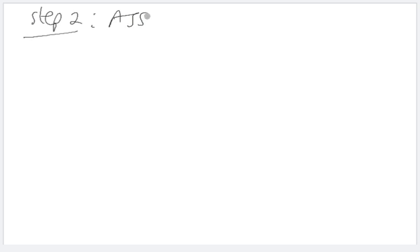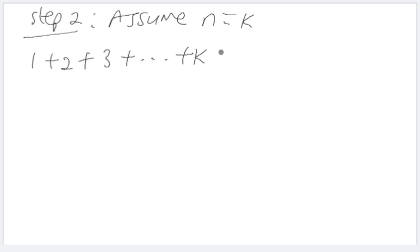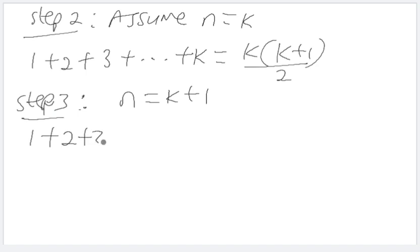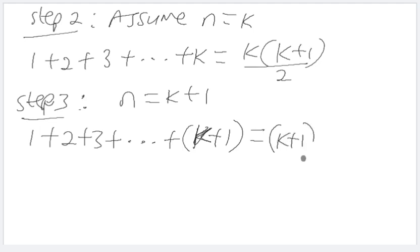Step two: we assume that it is also true for n equals k, so the statement becomes one plus two plus three plus ... plus k equals k times (k plus one) over two. Then step three: we must show this result is also true for n equals k plus one, so we need to show one plus two plus three plus ... plus (k plus one) equals (k plus one) times (k plus two) over two.